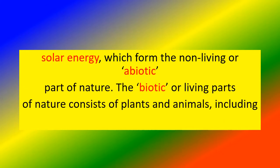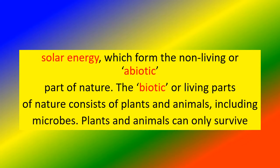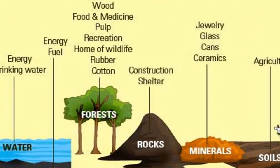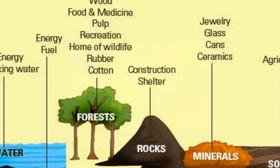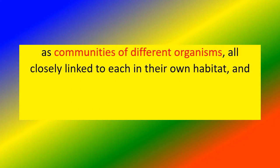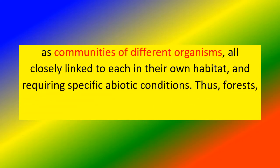The biotic or living parts of nature consist of plants and animals, including microbes. Plants and animals can only survive as communities of different organisms, all closely linked to each other in their own habitat, and requiring specific abiotic conditions.